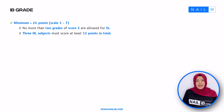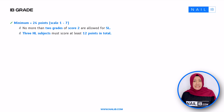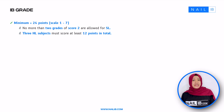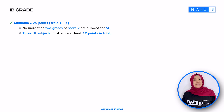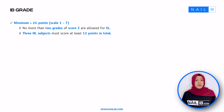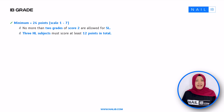For your IB final grade — to get the certificate — you need a minimum of 24 points, with at least three higher level subjects totaling 12 points. In case you choose IB chemistry standard level, you need to get at least a score of two, but we aim for you to get seven with NAIL IB and follow the instructions very well. You should and have to get the score of seven.